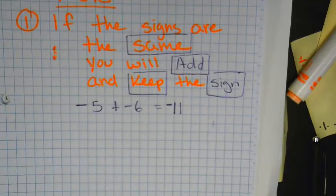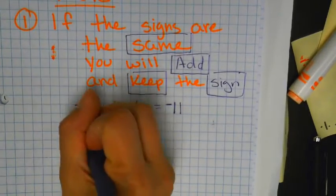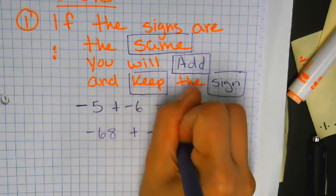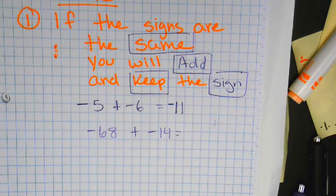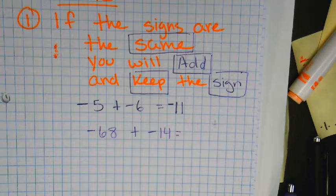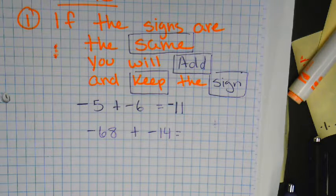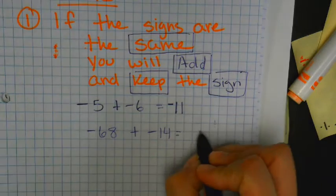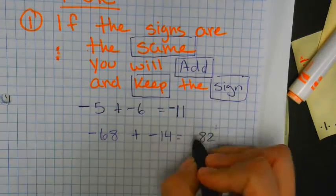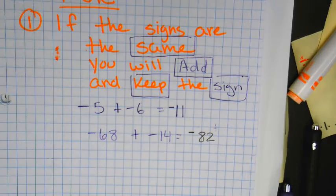So if it's negative 68 plus negative 14, you check the signs first. They're both negative, right? So what do you do if they're both negative? They're the same, so you're going to add them. You get 82, and they're both negative, so you keep it a negative. Okay, that's it.